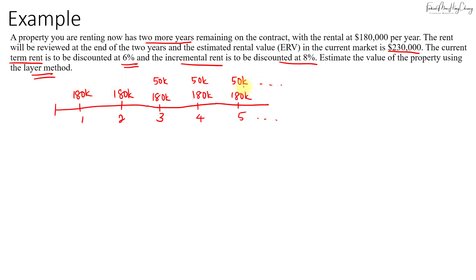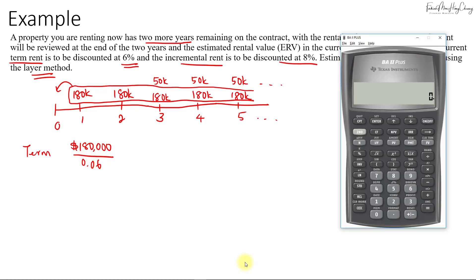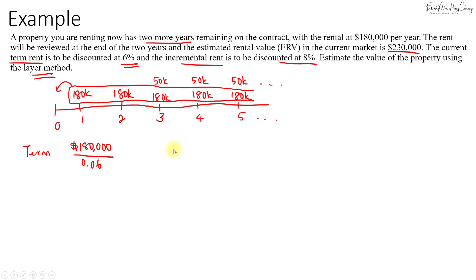For the term rent, we'll present value this $180,000 back to year zero. That would be $180,000 divided by the cap rate, which is 6%, the lower rate. So that gives us $180,000 divided by 0.06, which is $3 million for the term rent portion.